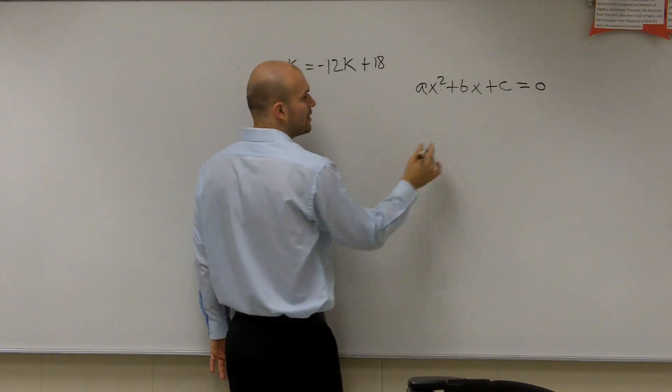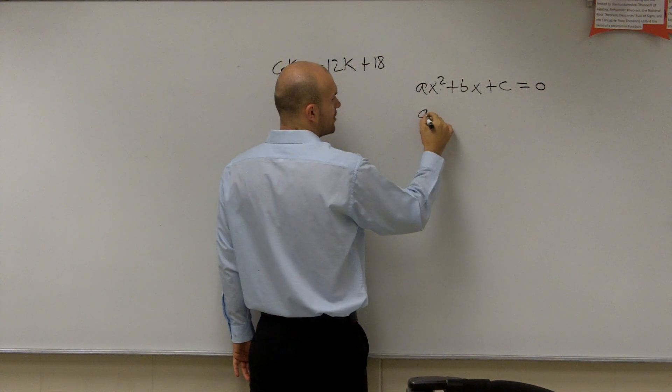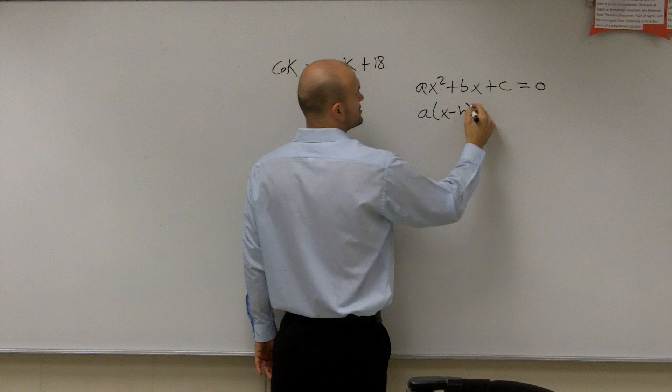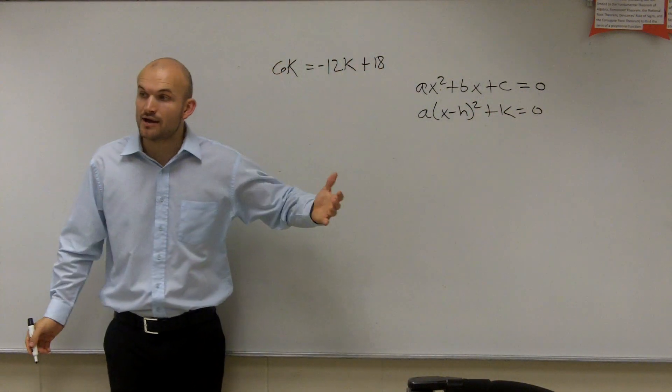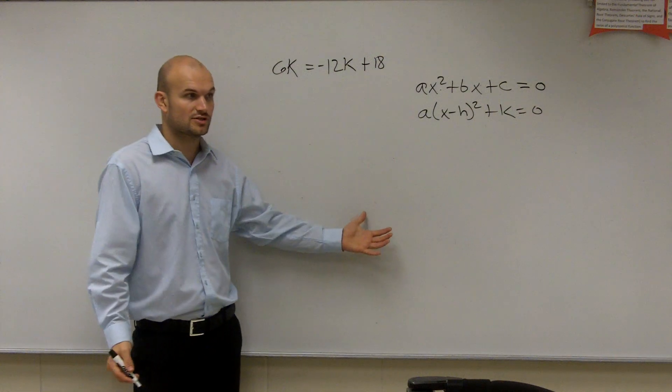We want to take it from our definition of a quadratic to our quadratic form, which is a times x minus h squared plus k equals 0. So we're going to have to put it to that form. To do that, we're going to have to use the process of completing the square.